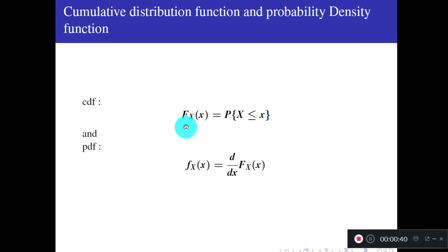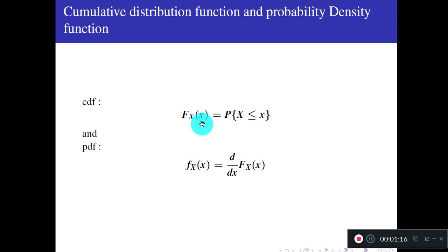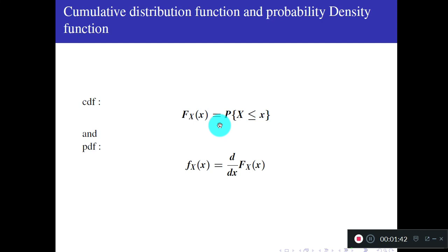CDF is the short form of cumulative density function. It is given by F_X(x) = P(X ≤ x), where capital X is the random variable — a real-valued function from the sample space to the set of real numbers. Similarly, PDF stands for probability density function, defined as the derivative of the CDF. For CDF we use capital F_X, and for PDF we use small f_X.